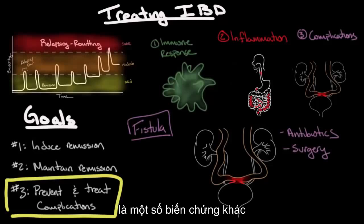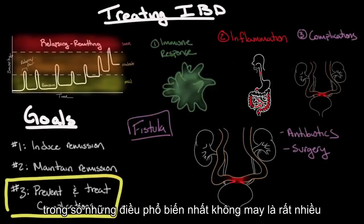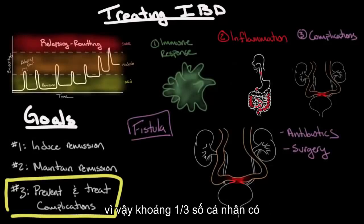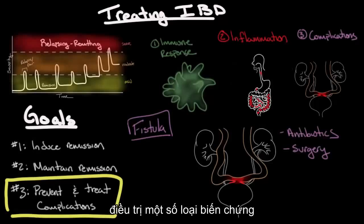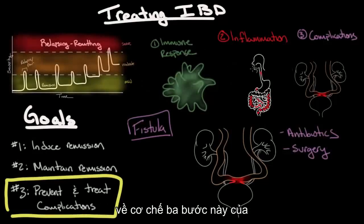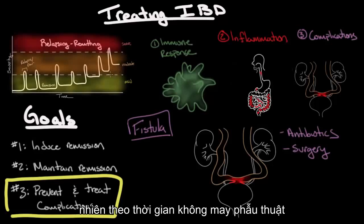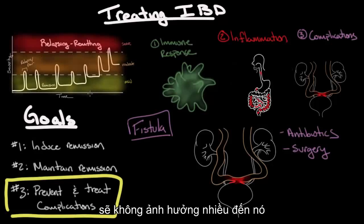There are other complications that can occur with Crohn's disease and ulcerative colitis, but abscesses and fistulas are two of the most common. Unfortunately, many complications do require surgery — about one third of individuals with inflammatory bowel disease will eventually need surgery for some complication. Unfortunately, surgery is not curative. Thinking about the three-step mechanism, surgery really only treats the complications; it doesn't affect the inflammation or the underlying immune response.